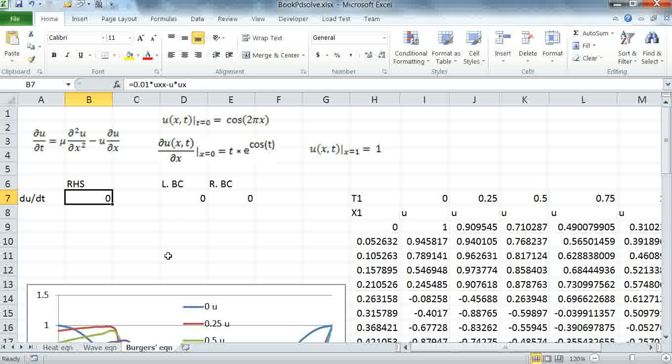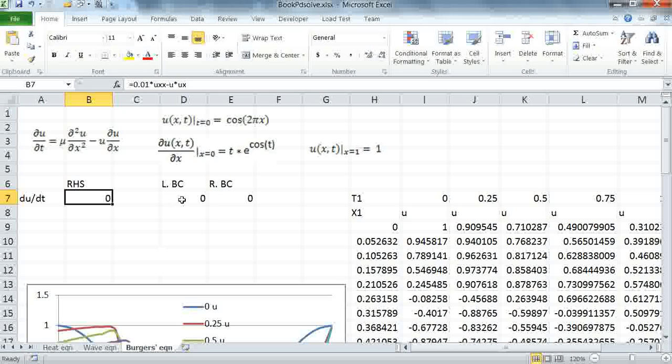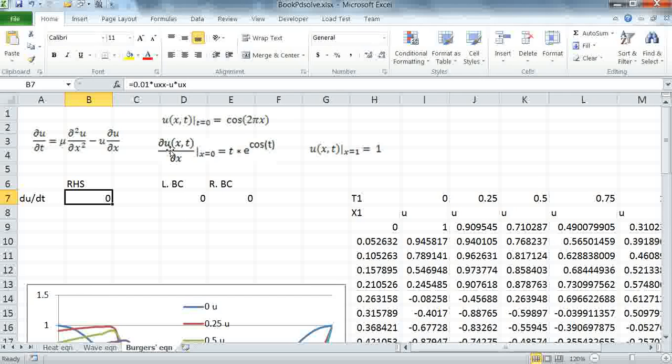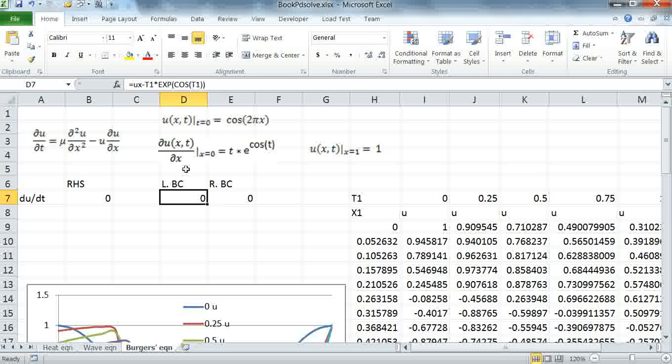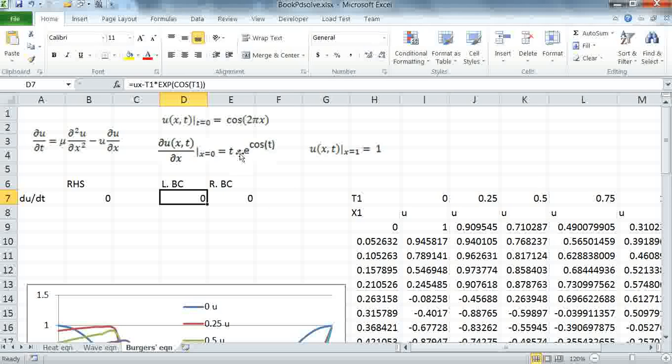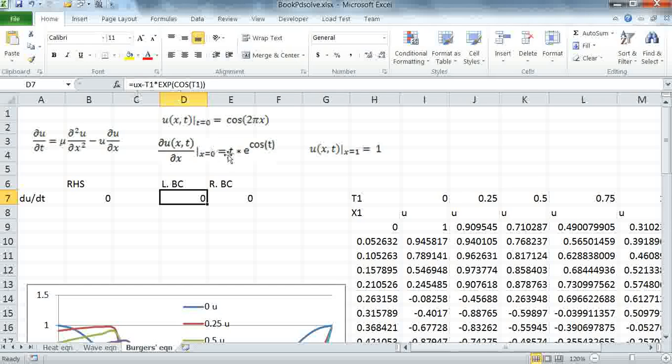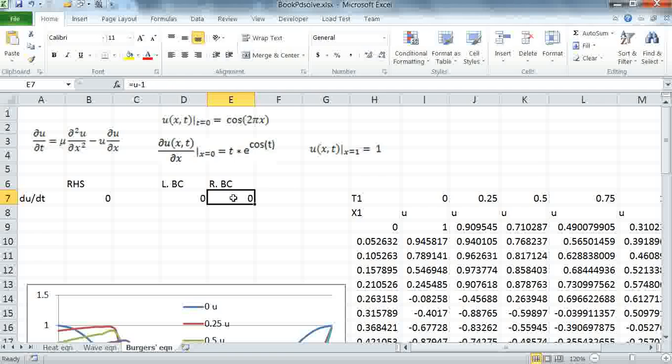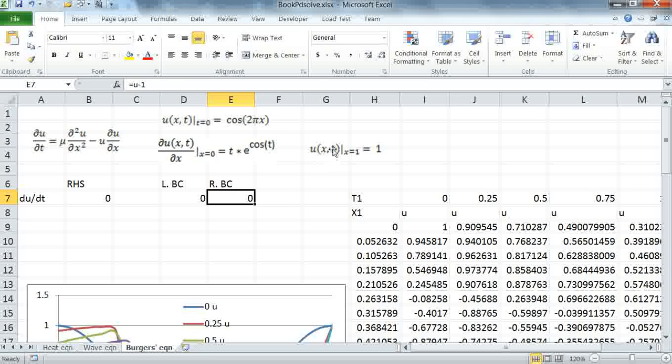Next, I need to define the left and right boundary conditions for the equation. And again, they correspond to the given equations here. My left boundary condition is ux and I have to define the equation with respect to zero on one side. So I move this term to the left hand side. So it becomes ux minus t1 times exponential cosine t1. Likewise, for the right boundary condition, it's simply u minus one.